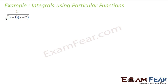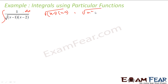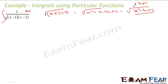So in this question I have to find the integral. I can convert the denominator into a particular function because it is nothing but root of (x-1)(x-2), which is nothing but x²-x-2x+2, that is root of x²-3x+2. This I can write in the form of a completed square.